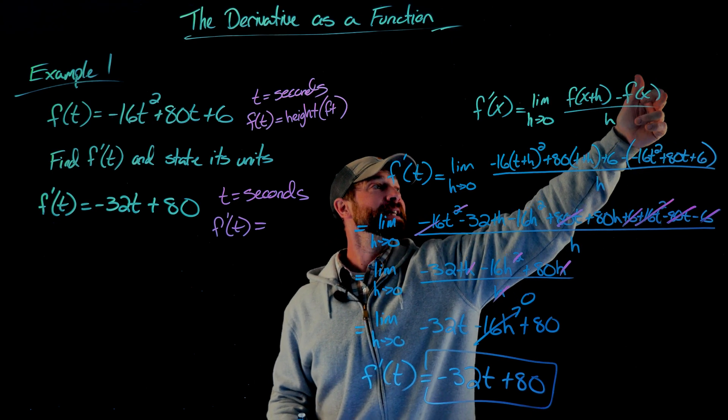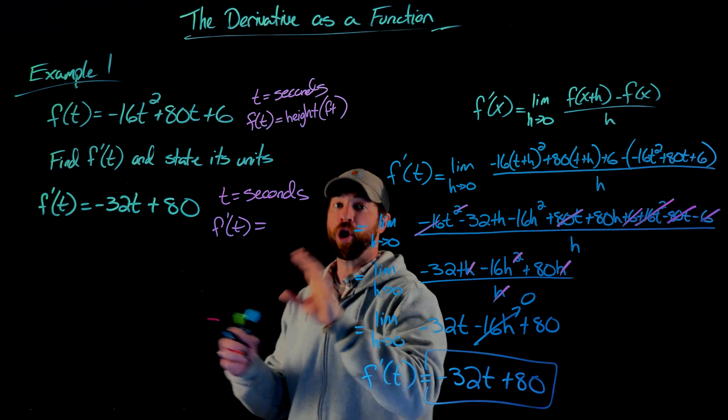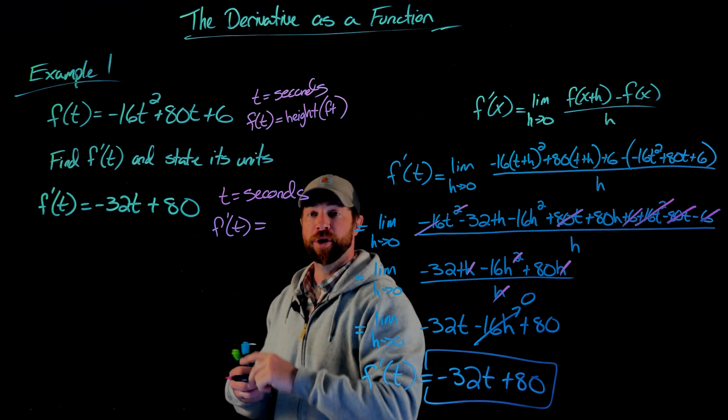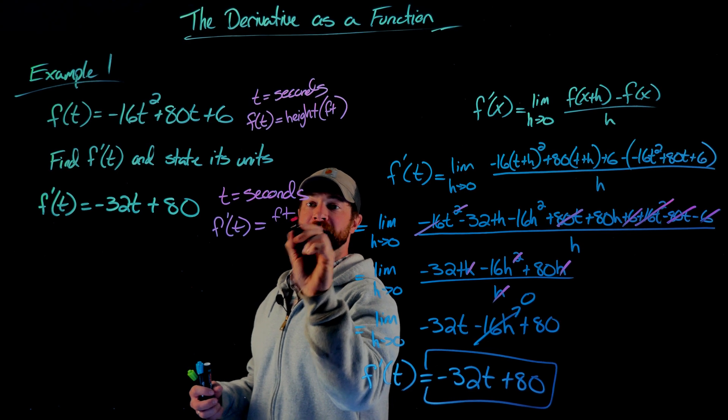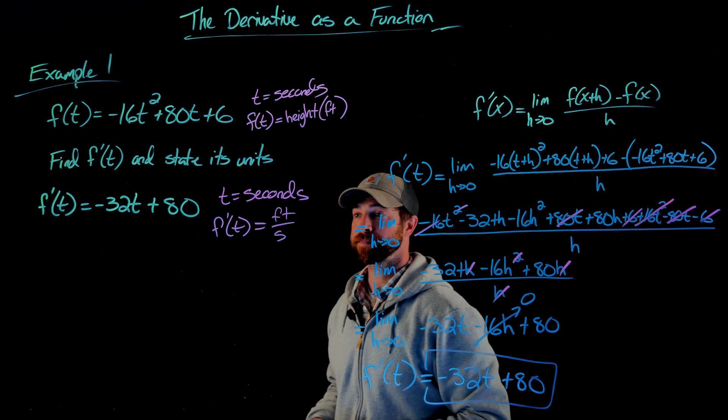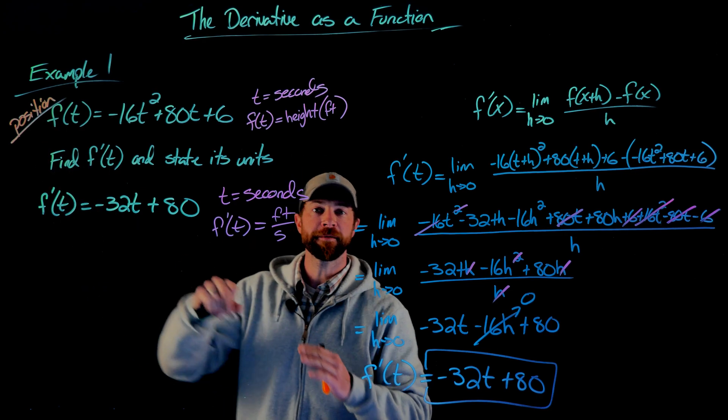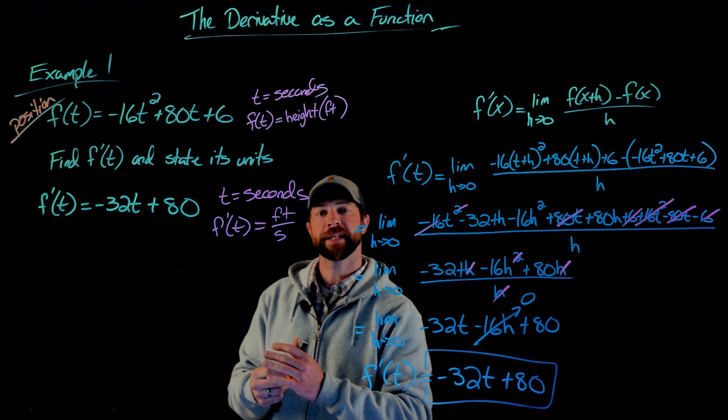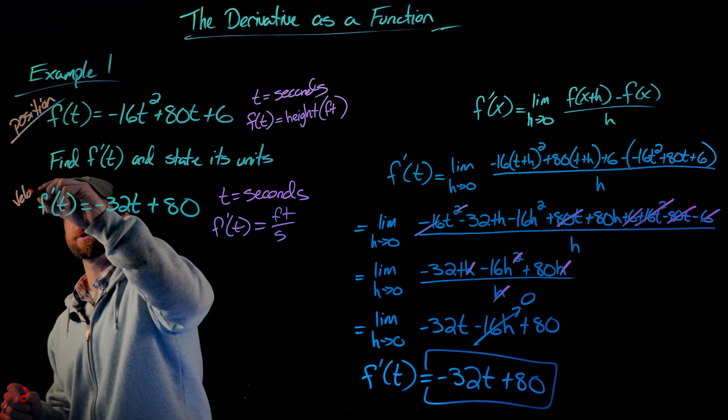That's exactly what this is finding, right? This is the change in the outputs over the change in the inputs. Therefore, this function, all it is doing is outputting those rates. In this problem, it's feet per second. And to put a button on this real fast, if the original function is this position function, then the first derivative, which is the rate of change, is then the velocity function.